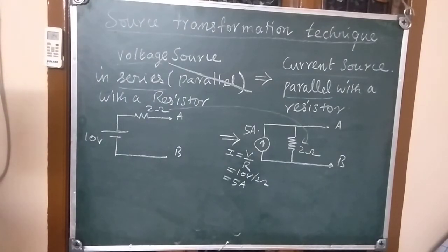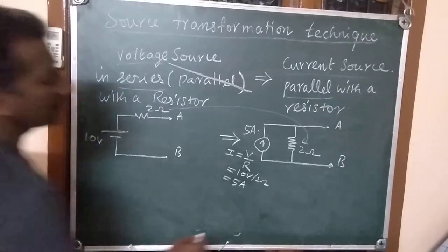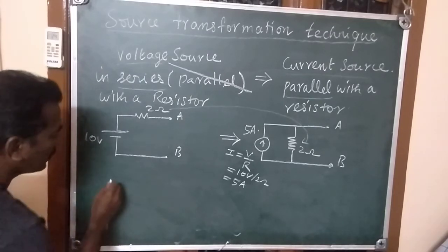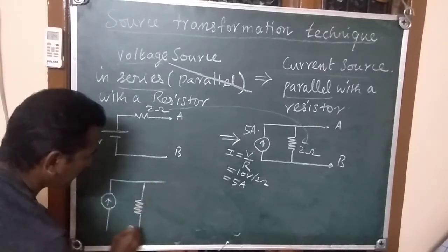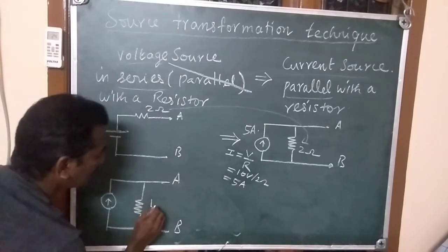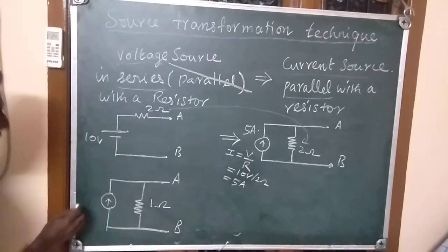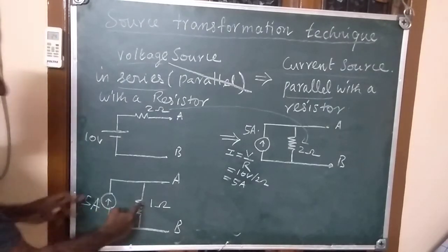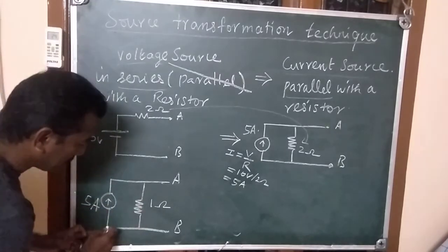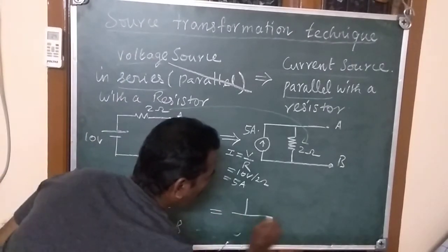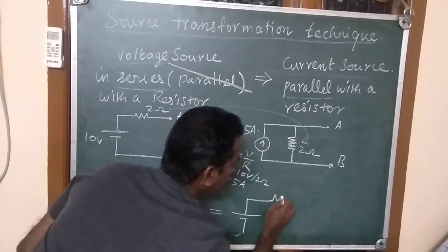Similarly, we can convert a current source parallel with a resistor across terminals A and B. Assume the resistance is 1 ohm and the current source is 5 amperes — so 1 ohm in parallel with 5 amperes. Since both ends are connected, they are parallel, and this can be converted into a voltage source in series with the resistance.